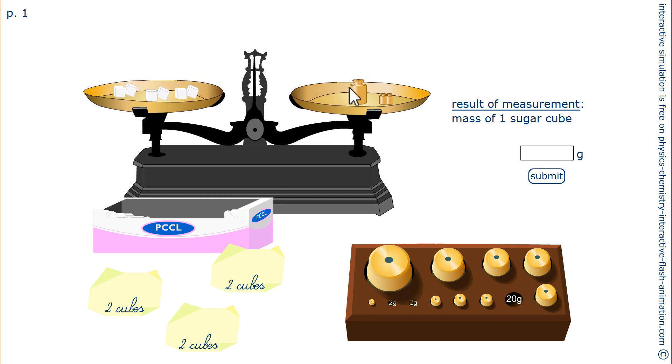The equilibrium is done with 24. There are 6 sugar cubes. 24 divided by 6 equals 4. The mass of each sugar cube is 4 grams.